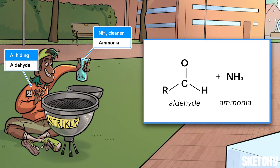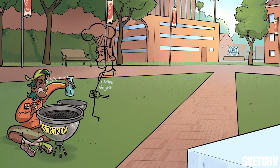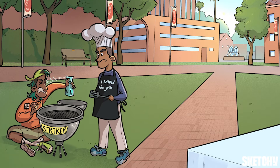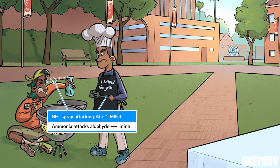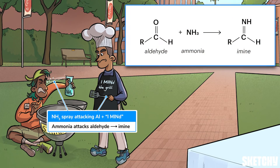The ammonia in this first step usually comes from ammonium chloride salt. On the aldehyde, the identity of the R group determines the side chain of the amino acid and, therefore, which amino acid is ultimately made. Al attacking himself with ammonia should help you remember that in the first step of the Strecker synthesis, ammonia attacks the aldehyde's carbonyl carbon to create an imine.